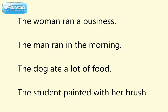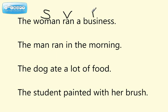So if we look at the first sentence here, the verb is ran, so we'd make a V over ran. Who ran? That would be the woman, so she is the subject. The woman ran what? What did the woman run? She ran a business — that's our direct object, that is what she ran. Remember, a direct object tells us who or what. It doesn't tell us where, when, or how.